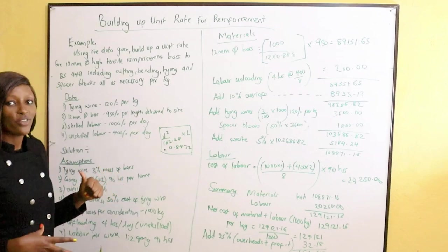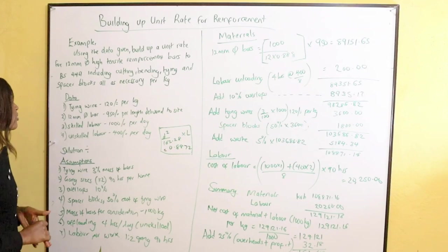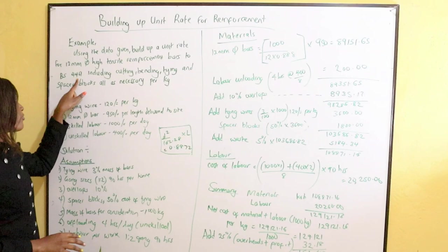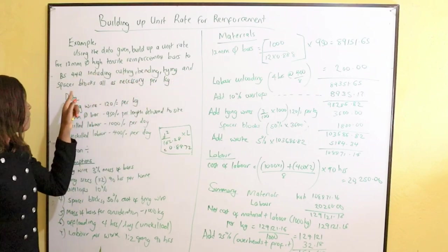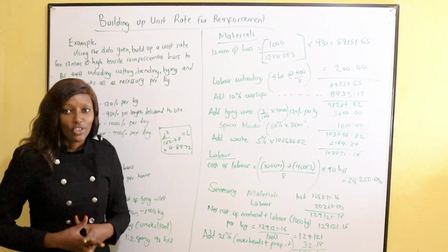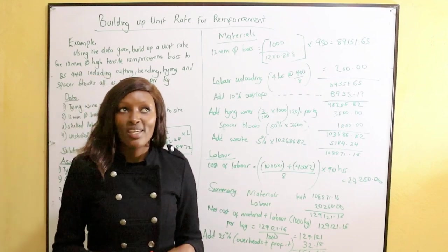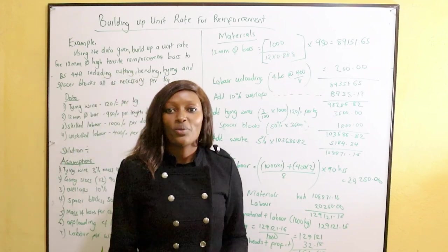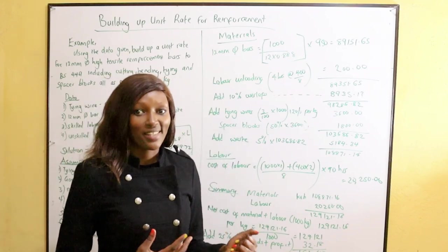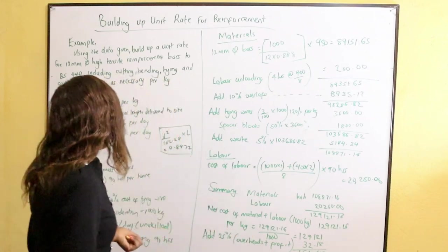Our question says: using the data given, build up a unit rate for 12mm diameter high-yield reinforcement bars to BS 4461, including cutting, bending, tying, and spacer blocks — all as necessary. When using reinforcement bars, especially in a slab, we use them together with spacers and tying wires, also called binding wires, to tie the bars.